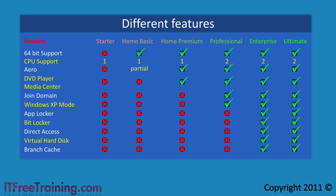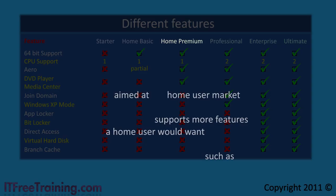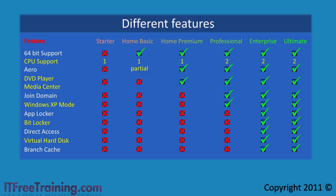The next edition is the Home Premium edition, aimed at the home user market. This edition supports more features a home user would want, such as DVD playback and the media center. The full Aero interface is also included in this edition.